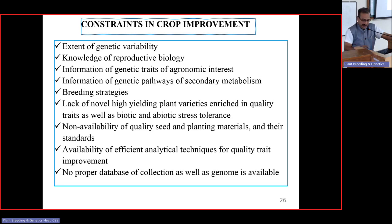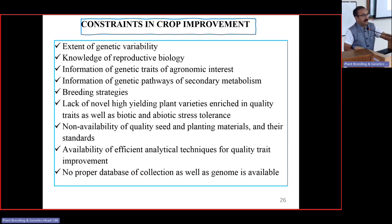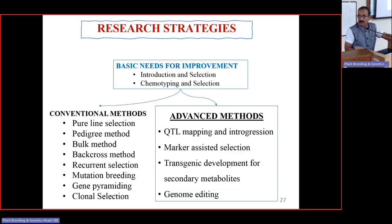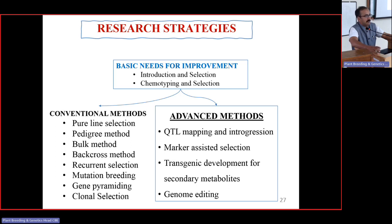Breeding strategies are not well defined because the reproductive biology and mode of pollination are not known for many crops. There is a lack of novel high-yielding plant varieties enriched in quality traits as well as biotic and abiotic stress tolerance. Non-availability of quality seed and planting materials, and lack of efficient analytical techniques for quality trait improvement are also major constraints. No proper database of germplasm collection and genome information is available, though some genomes like Tulsi have been sequenced by CIMAP using NGS.